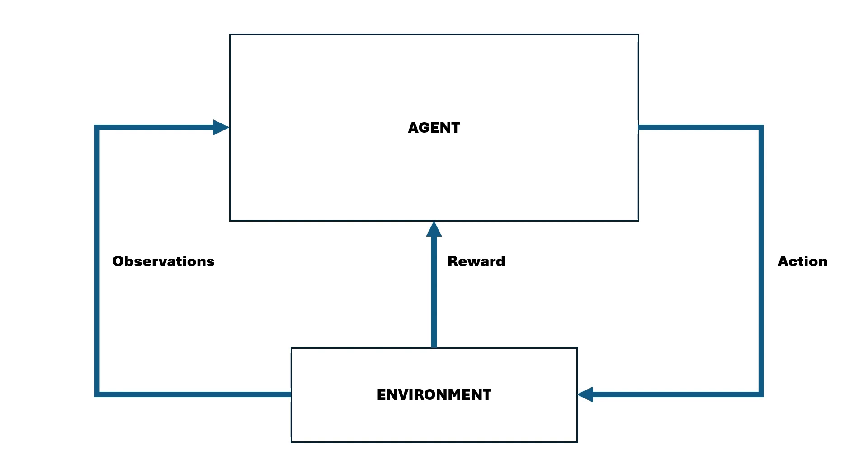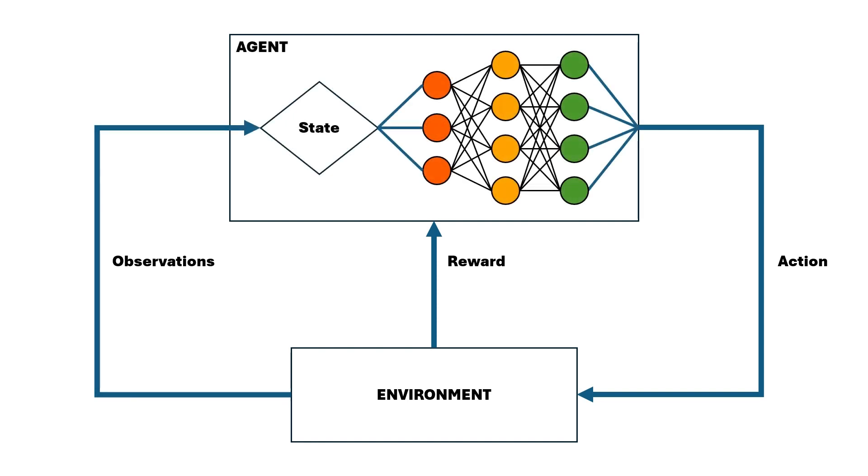For this project, we used Deep Queue Networks, or Deep Queue Learning. This popular reinforcement learning method takes the environment state as an input and uses a neural network to output the queue values, or expected future reward, for each possible action.